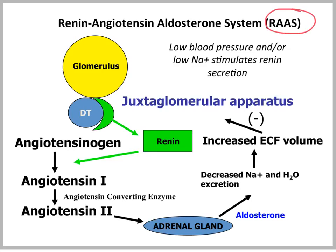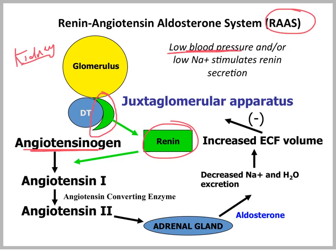So what happens? I'm going to start where we have a situation of either low blood pressure or low sodium. The juxtaglomerular apparatus is sensing the filtration or the low blood pressure — obviously in the kidney because the glomerulus is in the kidney. When that happens, the peptide renin is made. So low blood pressure leads to renin production. Renin is essentially an enzyme that can convert angiotensinogen to angiotensin 1. This is the first step associated with angiotensin converting enzyme, known often as ACE.